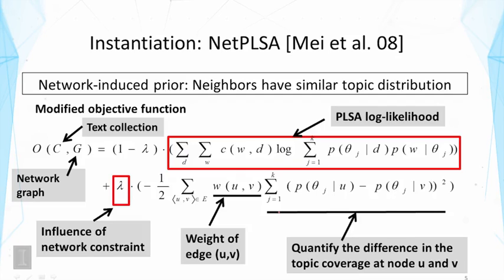Finally, you see a parameter lambda here. This is a new parameter to control the influence of network constraint. We can see easily if lambda is set to zero, we just go back to the standard PLSA. But when lambda is set to a larger value, then we will let the network influence the estimated models more. The effect here is that we're going to do basically the PLSA, but we're going to also try to make the topic coverages on the two nodes that are strongly connected to be similar. We ensure their coverages are more similar.